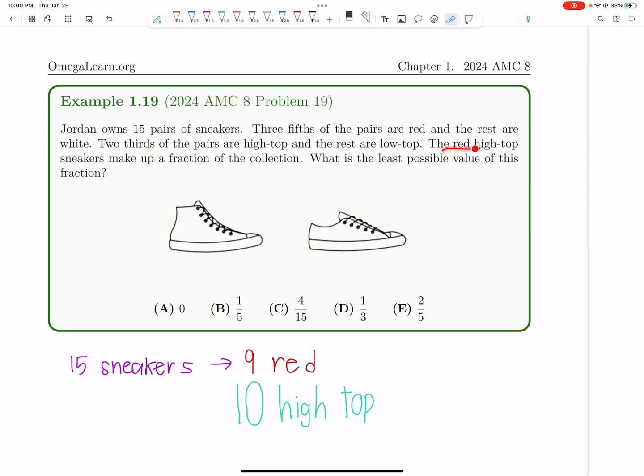And we're like, okay, we want to minimize the fraction of shoes that are both red and high-top. So it's asking to minimize the fraction, but that's essentially the same thing as minimizing the number.